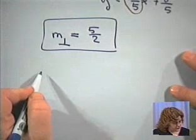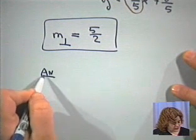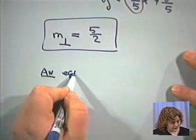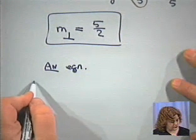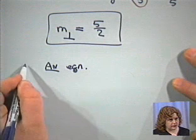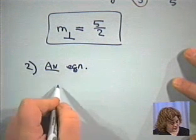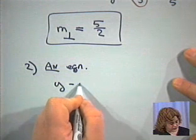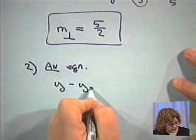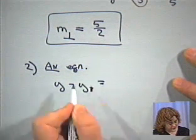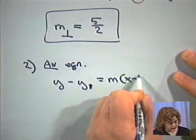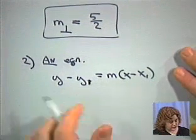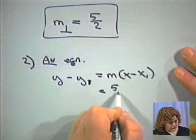Now, I was only asked for an equation. That means I can pick a form, any form, and I'm going to choose point-slope form. So my second step is to write an equation. Point-slope form again, y minus y1 is your slope times x minus x1. Well, we'll just substitute in.